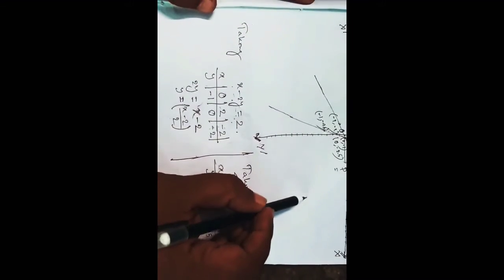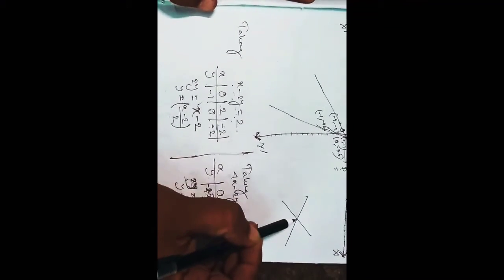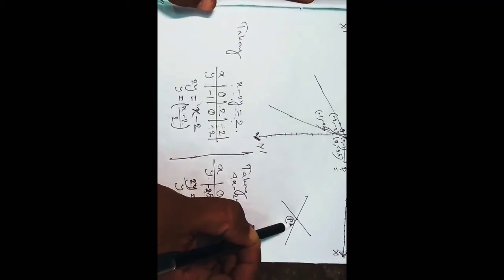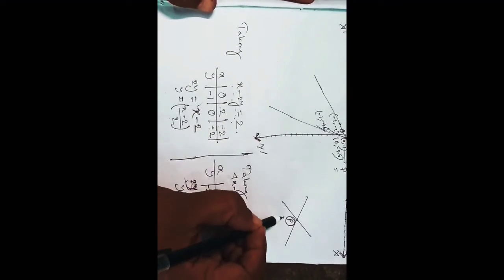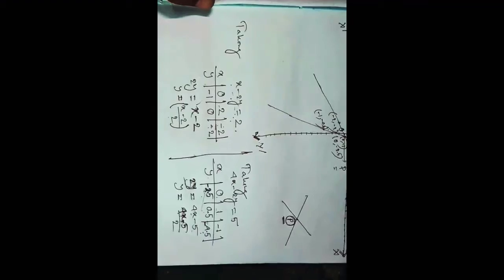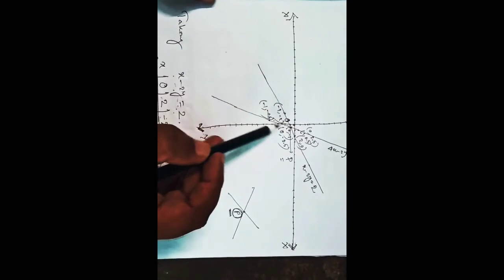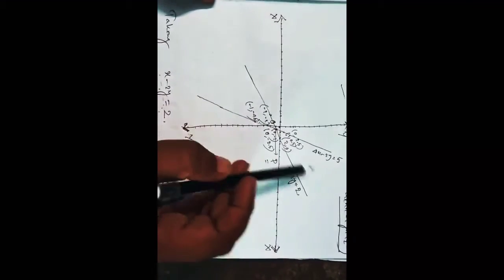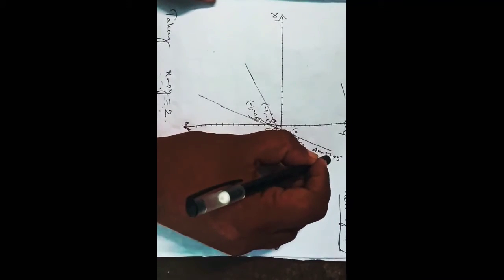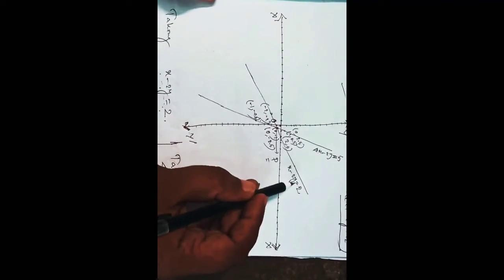We have to put these values on the graph paper and see that these two straight lines must intersect at one point. If two straight lines intersect at one point, then we can say that the two straight lines are consistent. We have already plotted the straight lines — this is the line of 4x minus 2y equal to 5 and this is x minus 2y equal to 2.